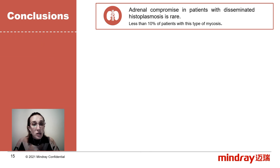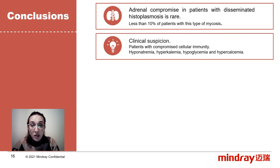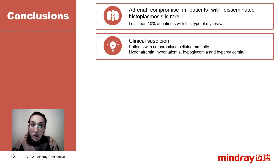Adrenal involvement in patients with disseminated histoplasmosis is rare. Less than 3% of patients with this type of mycosis develop this complication. It is important to suspect adrenal hypofunction in patients with compromised cellular immunity when they have suggestive laboratory findings such as hyponatremia and hyperkalemia, which was the case of our patient, and less commonly, hypoglycemia and hypercalcemia.